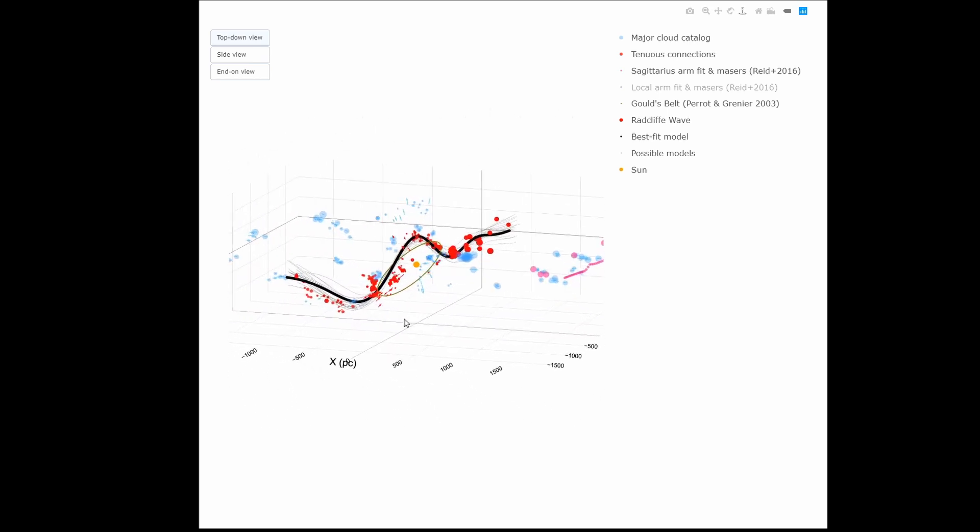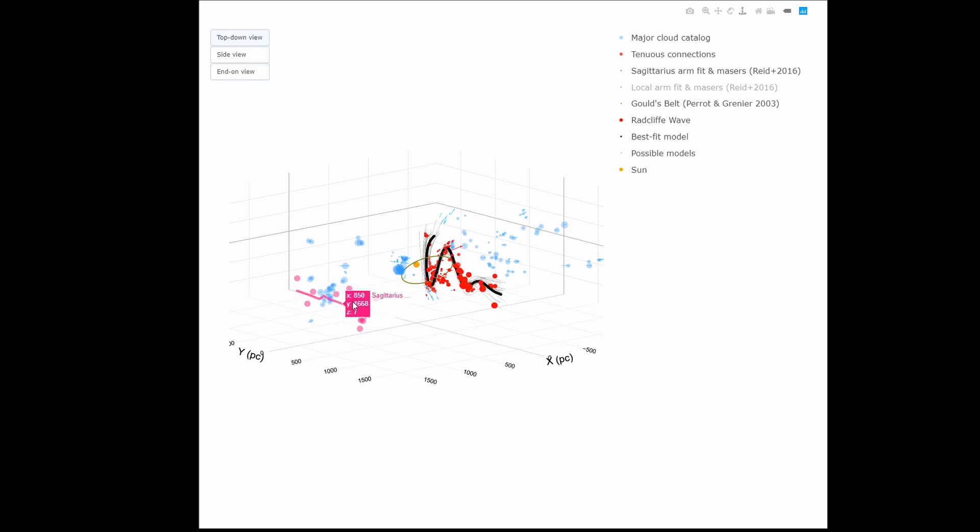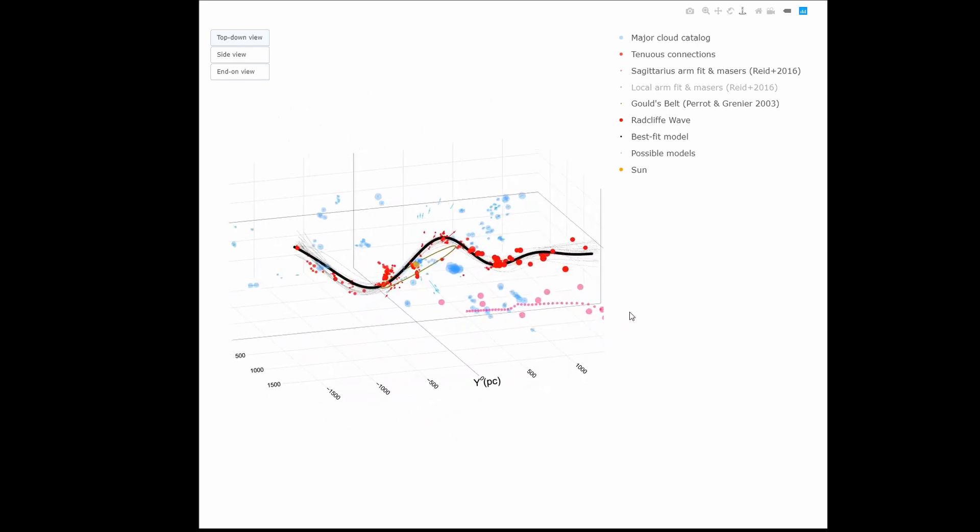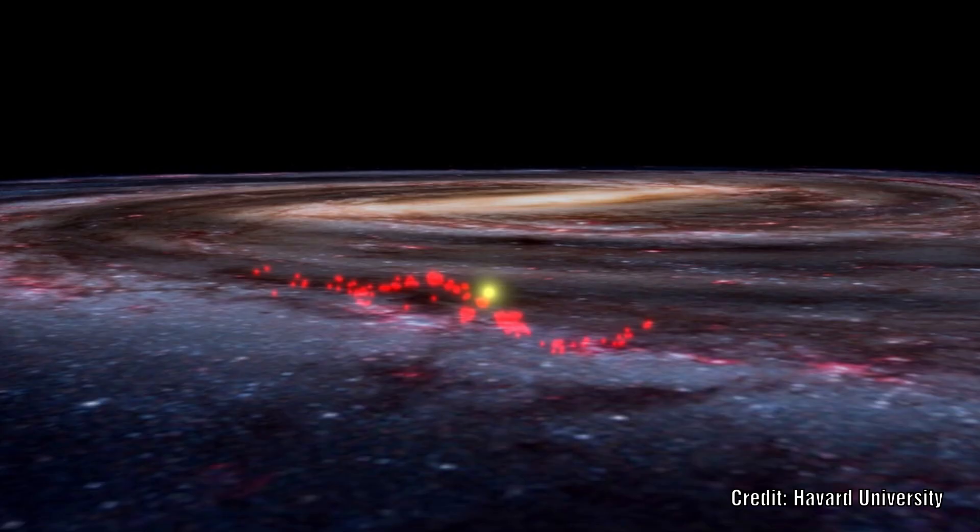The part that they have mapped is about 9,000 light-years long and about 400 light-years wide, and follows the local arm of the Milky Way. It rises and falls above the galactic plane by about 500 light-years, with a wave periodicity of about 6,000 light-years.